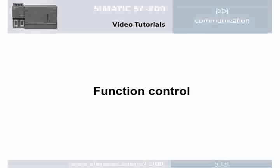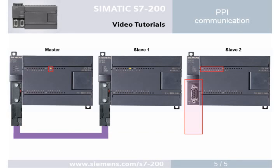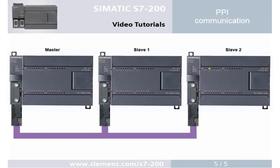Step 5: Function control. With the transition of the master PLC into run mode, the running light is output in the given sequence. If the communication of the master with one of the slaves is interrupted, the running light goes out on the respective slave and output bit Q1.1 is set.